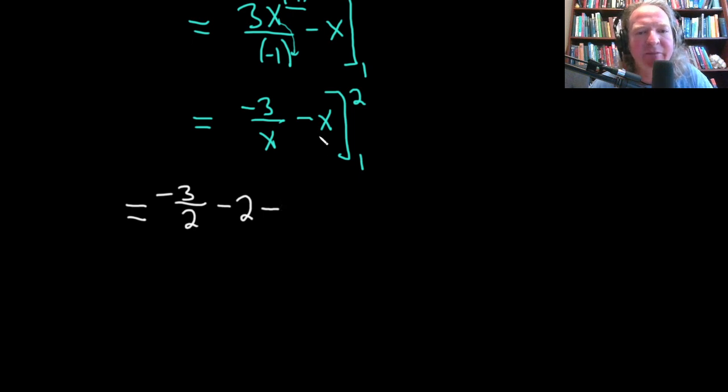And minus, now this is two terms, so it's really important to use parentheses. So parentheses, negative 3 over x, or 1 because x is 1, minus 1.